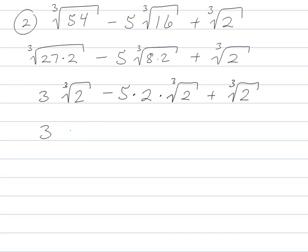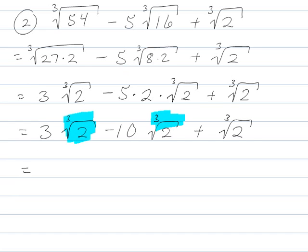And now this is looking a little better. 3 cube root of 2, minus 10 cube root of 2, plus yet another cube root of 2. Taking a look at this, I can recognize the units are the same for all of these. So I have 3, minus 10, plus, remember there's like a secret 1, plus 1. 3 minus 10 plus 1 would be minus 6 cube root of 2.